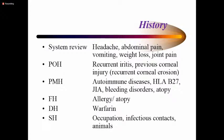In past ocular history, ask about recurrent iritis — inflammation of the iris — previous corneal injury or erosions, and recurrent corneal ulcers due to trauma or inherent corneal weakness. In past medical history, note autoimmune diseases especially HLA-B27 and juvenile idiopathic arthritis because of their association with uveitis. Ask about bleeding disorders, since patients can bleed onto the eye presenting as a red eye, and atopy because of the link to allergic conjunctivitis.